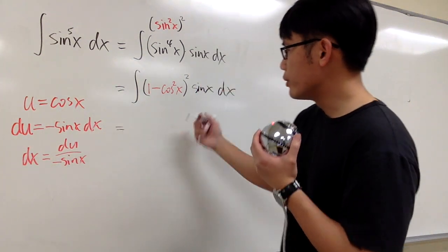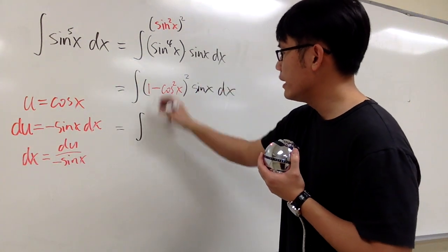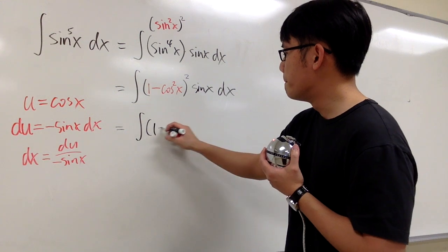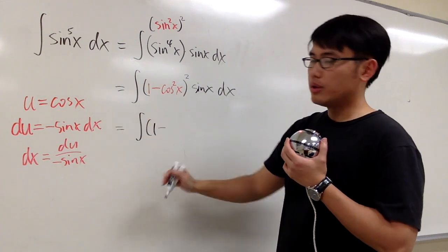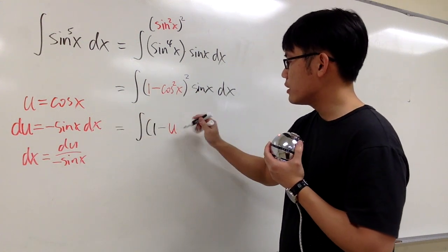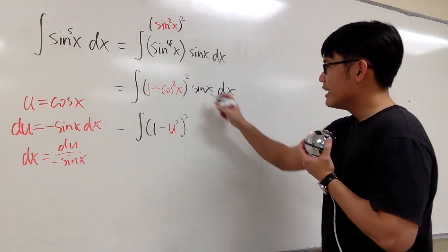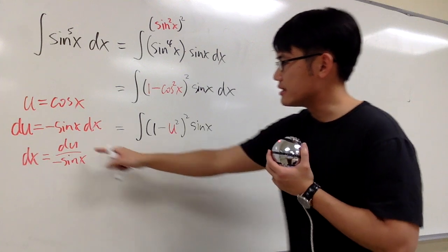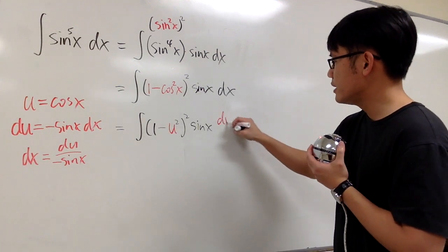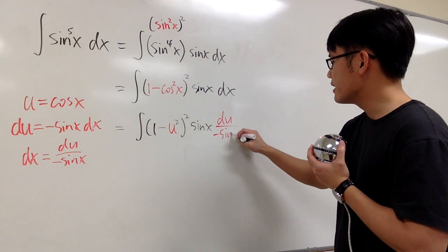And I'll take this integral into the u world. We have the integral, and the inside will be 1 minus u squared, and then square that. Okay? And then here we have the sin x, and the dx is du over negative sin x. And then you see the sin x will cancel each other out, so I will have to have this negative.